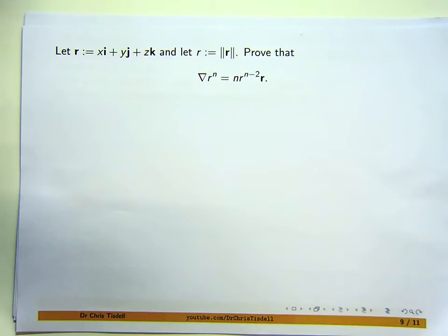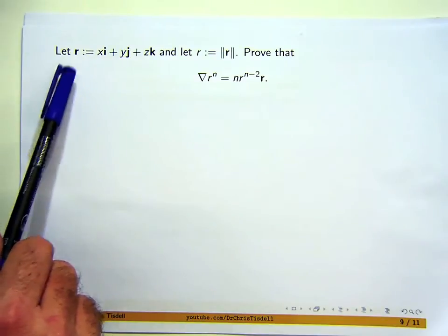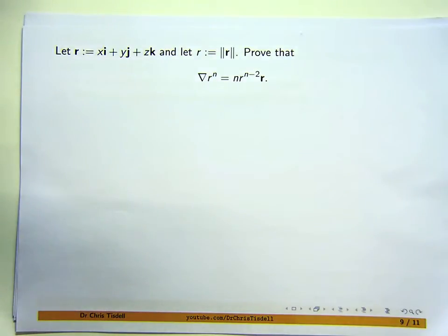So we have a vector-valued function r. r depends on x, y, and z. You put in numbers x, y, and z and you get out a vector. i, j, and k are just the usual basis vectors in three-dimensional space.